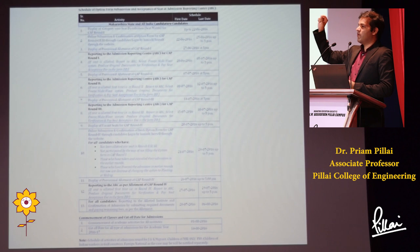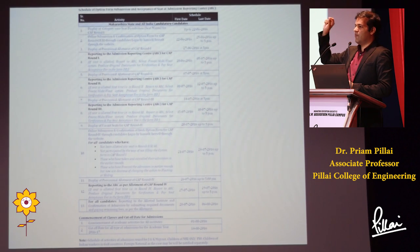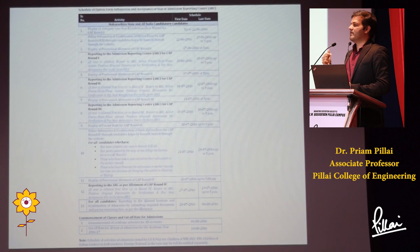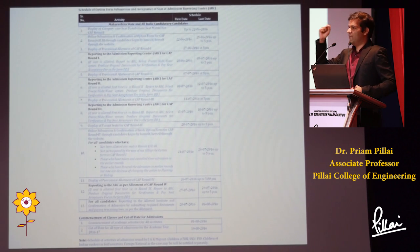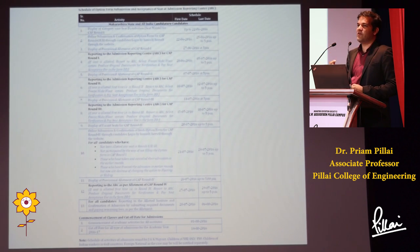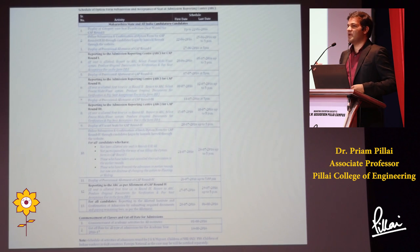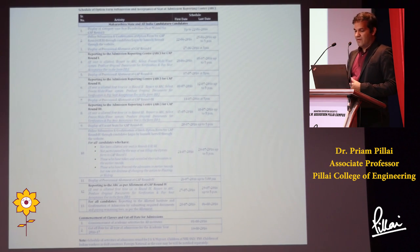The option form has to be filled out based on your preference. Your number one choice of college and course should be number one, number two should be next, all the way down to 300. That preference list is very important. If you've not done so, go home tonight, make a list of all the choices that you could possibly go to, visit the college's website, find out what types of courses are there, and then list those down.